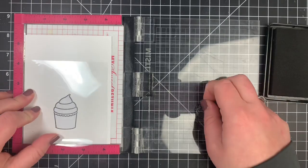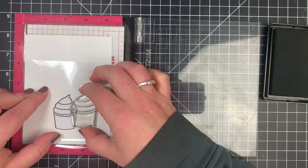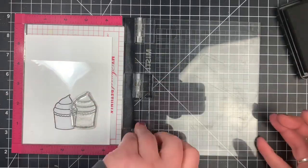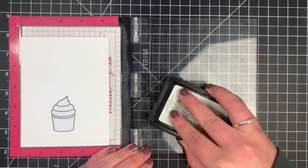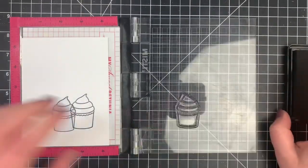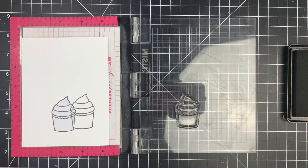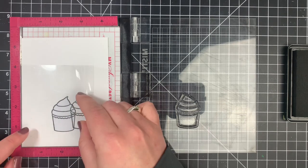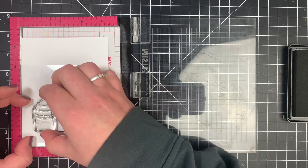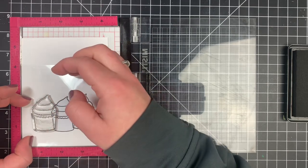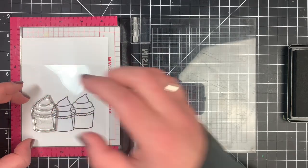I'm pretty much doing the same thing, just working back a little bit further than with the ice cream cones. Once I add these two, the second and third one, I can remove that mask that's in the center, and then line that up so I can stamp the ones that are going to be stamped off the edge of the paper.